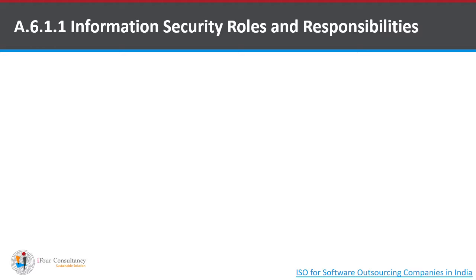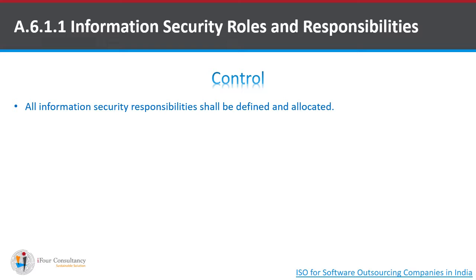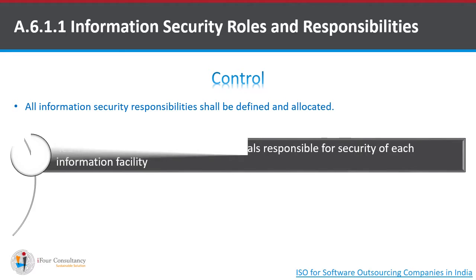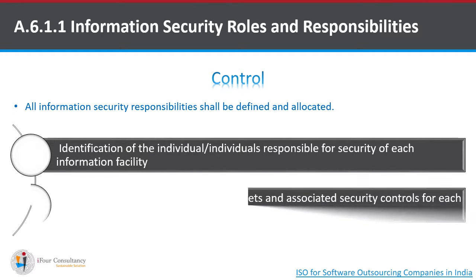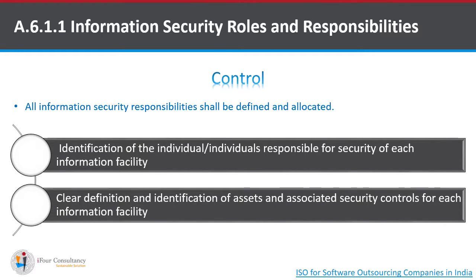Starting with A.6.1.1, i.e. information security roles and responsibilities. The control states that all information security responsibilities shall be defined and allocated. This talks about identification of the individual or individuals responsible for security of each information facility, and clear definition and identification of assets and associated security controls for each information facility.